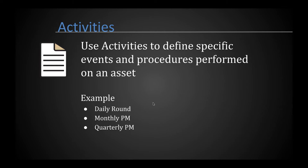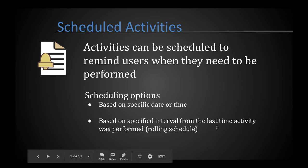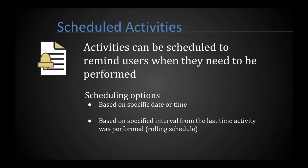An activity is the form where data will be entered, and you create one activity per event on that equipment. For a chiller, you might create an activity called 'daily round' for all data collected during the daily inspection. Because activities are mostly time-based, you can apply a schedule — either at a specific time such as 8 a.m. every morning, or on a rolling schedule where the next due date is a set number of hours from the last completion. These are your two scheduling options.